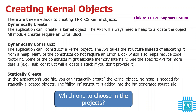Now, there are three ways you can create kernel objects in TI RTOS. The first one is to dynamically create the kernel objects. The second one is to dynamically construct the objects. And the third one is to statically create objects.